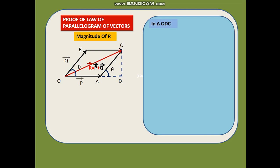In triangle ODC, applying Pythagoras theorem: OC² = OD² + CD². But OD is equal to OA plus AD from the diagram. So OC² = (OA + AD)² + CD². Opening the brackets: R² = OA² + 2·OA·AD + AD² + CD². We don't know AD and CD, so we must express them in terms of the known quantities P and Q.